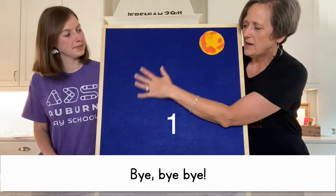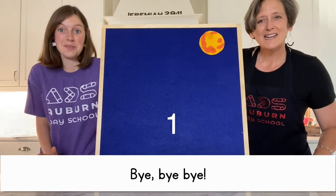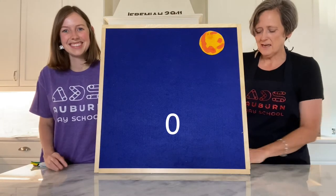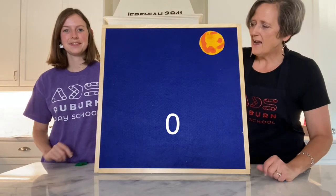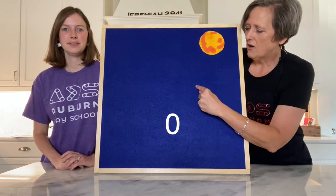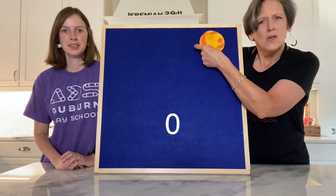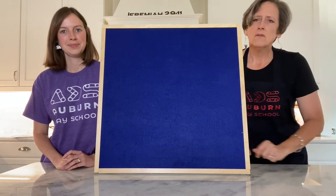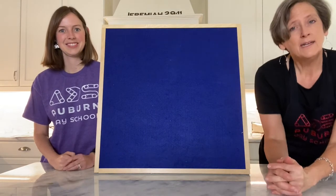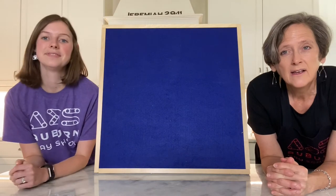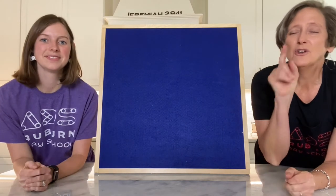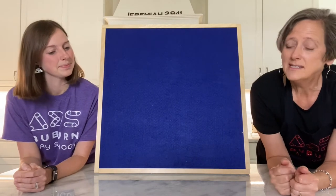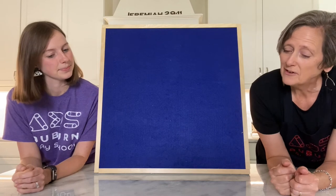One little raindrop dancing on the walk. Pitter patter, pitter patter, because that's the way it talks. Out came the yellow sun shining in the sky, and away goes the raindrop. Bye, bye, bye. How many do we have left? Zero. That's a decreasing pattern — we went from five all the way to zero. We took one away each time.